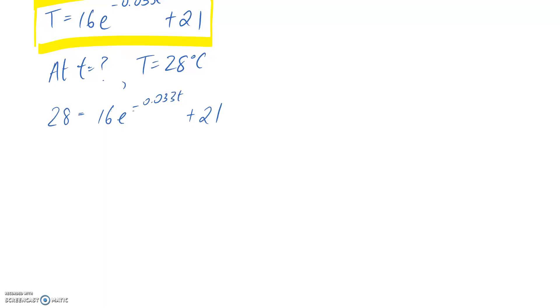Now it's just a case of solving for the only unknown, which is t. So I'll start by doing 28 minus 21, which leaves me with 7. Next, what I'm going to do is divide everything by 16, so I get 7/16, and I'm just left with the e on the other side.